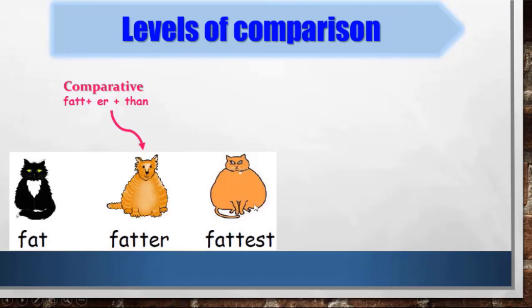But this one — the brown cat — is very, very fat. So how can I express this? We can say the brown cat is the fattest cat. It means there is no other cat fatter than this cat. This is the highest level of comparison that we have.